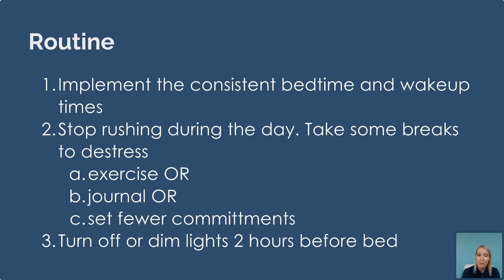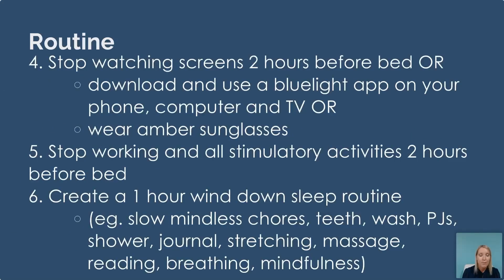Turn off or dim your lights two hours before bed. Stop watching screens two hours before bed, or download and use a blue light app on your phone, computer, or TV and reduce the brightness on your phone. Or you could wear amber sunglasses in the evening from two to three hours before bed. Stop working and stop doing any stimulatory activities at least two hours before bed. Create yourself a one-hour wind-down sleep routine.